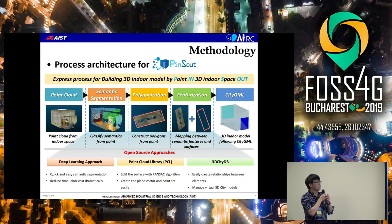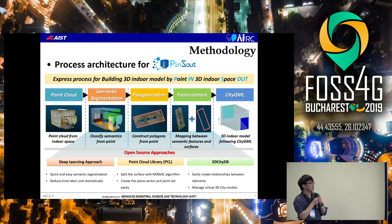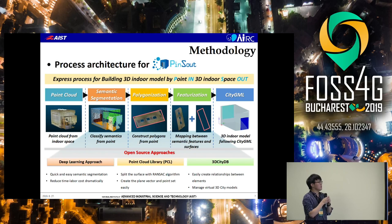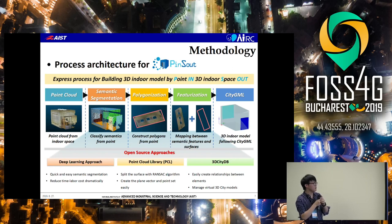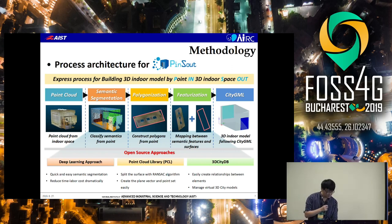We built the process architecture for our pipeline. It is the full process for building 3D indoor models. This process consists of three functional parts. The first function is semantic segmentation to classify semantics from points. The second is polygonization to construct polygons from points. The last is featurization to map between the semantic features and surfaces. We use open source tools for each process: deep learning, Point Cloud Library, and 3DCityDB. As a result, we get 3D indoor models following CityGML.